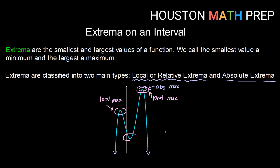We didn't have an absolute minimum, but we do have a local minimum. Local minimums can be thought of as the bottom of a valley. So here we get a local minimum.